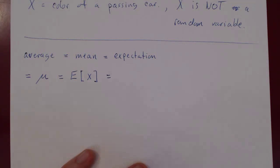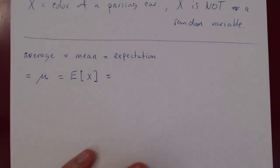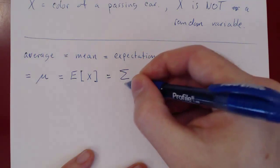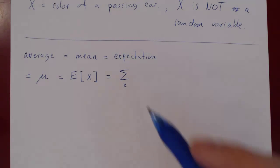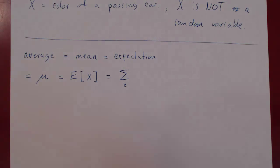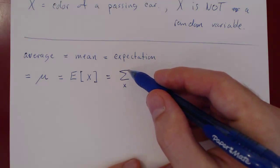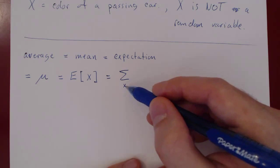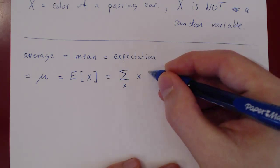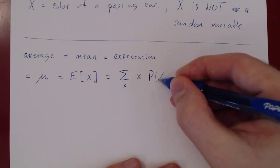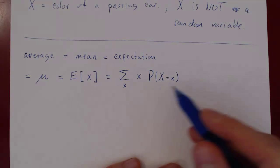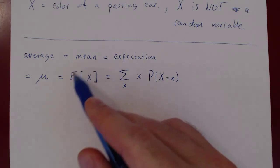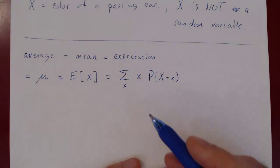The expectation is just the average. How do we find the average of a random variable? We sum over all possible values: uppercase X means the random variable, lowercase x means the actual values. We sum over all values of x the value times the probability that the random variable equals that particular value. Computing this gives us the average, the mean, of our random variable.